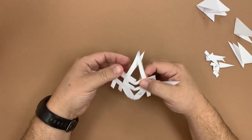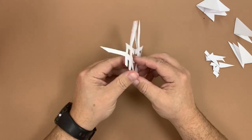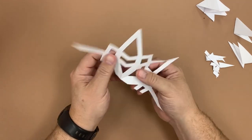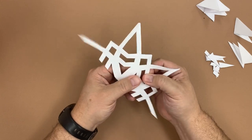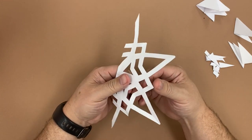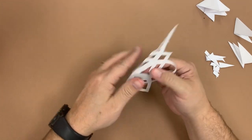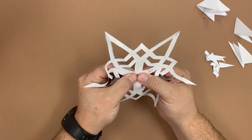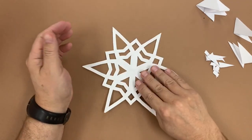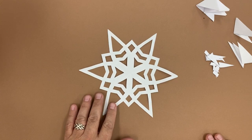Unfold again, press it nice and flat, and unfold the last half, and we've got our perfect six-pointed snowflake.